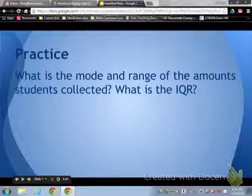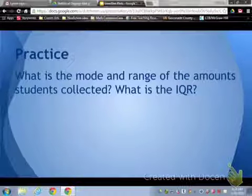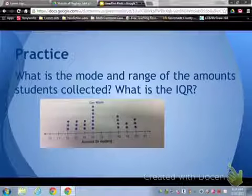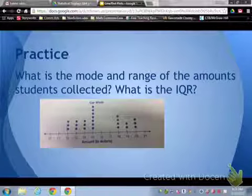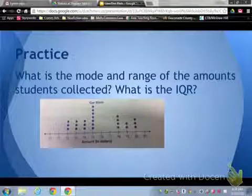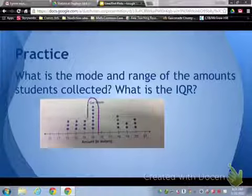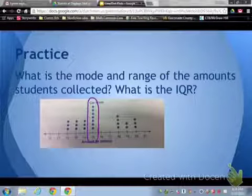Now, what is the mode and range of the amounts that we collected? The first one we're going to look at is the mode. Now we have the chart on here so we can look. Which one is in there the most often? If we look, it's pretty easy to see. You just have to look at which one has the most dots. So in this case, the one with the most dots is 15, so the mode would be 15.